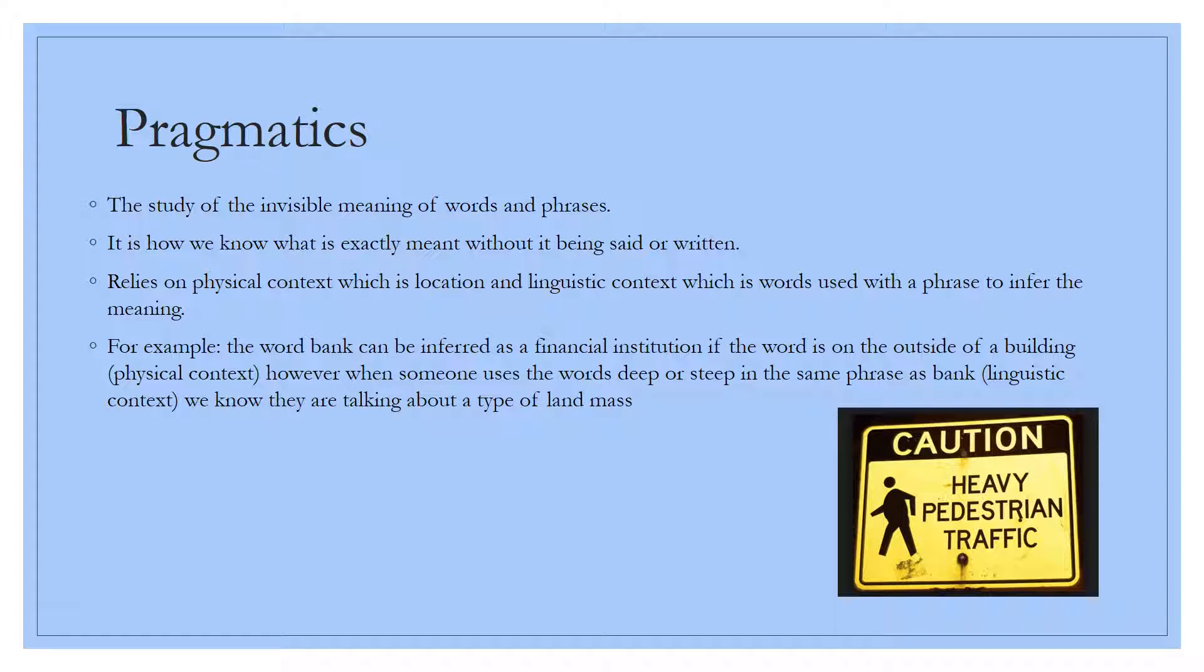Hi, my name is Sarah House, and I'm going to be talking about pragmatics. Pragmatics is the study of the invisible meaning of words and phrases. It's basically how we know what the speaker means without it being said or written. It relies on physical context, which is the location, and linguistic context, which is words used with a phrase to infer the meaning. For example, the word bank can be inferred as a financial institution if the word is on the outside of the building, which is physical context. However, when someone uses the words deep or steep in the same phrase such as bank, which is the linguistic context, we know they are talking about a type of landmass. The picture I included says heavy pedestrian traffic. It could mean two things that the pedestrians are heavyweight or that there's going to be a lot of pedestrian traffic. We obviously know it means that there's a lot of pedestrian traffic.